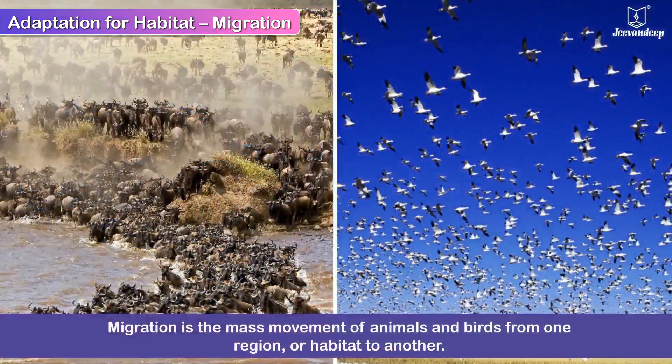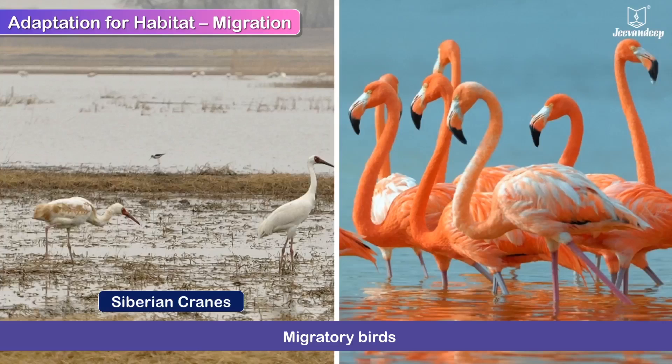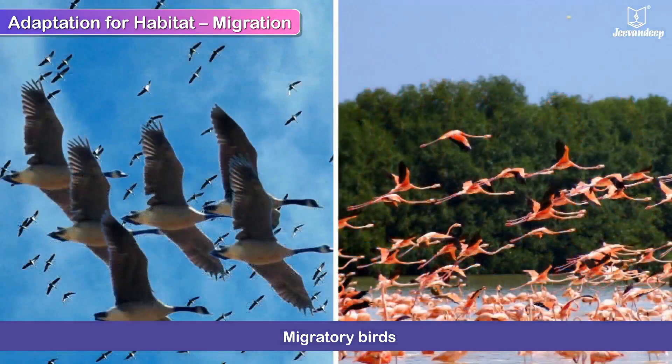Migration is the mass movement of animals and birds from one region or habitat to another. In certain seasons, animals and birds migrate in order to breed, find food or avoid the extremely cold weather. Siberian cranes and the flamingo are migratory birds.